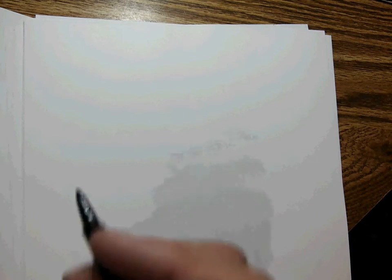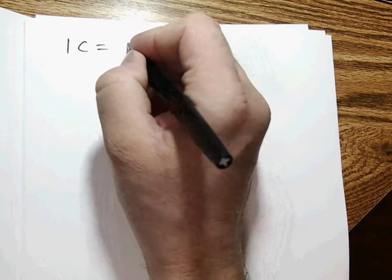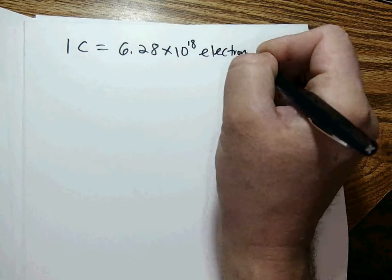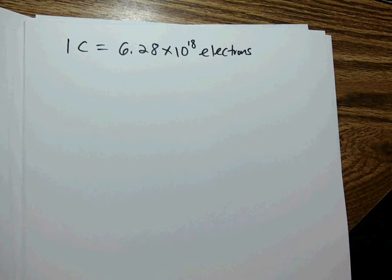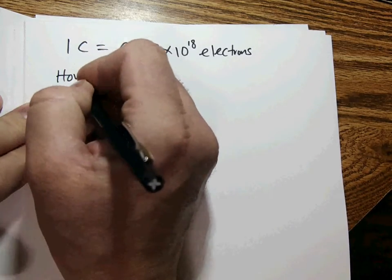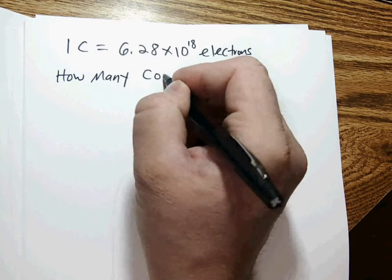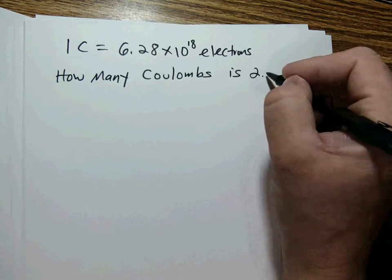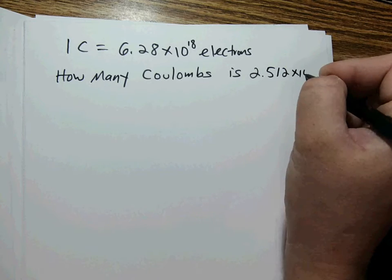Now for Example 9 — the world of electric charge and the coulomb, represented by the letter C. One coulomb equals 6.28 times 10 to the 18 electrons — a lot of electrons to make up one coulomb. The question asks: how many coulombs is 2.512 times 10 to the 21 electrons?